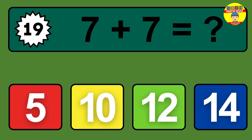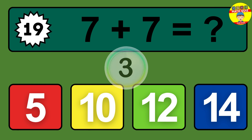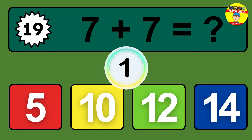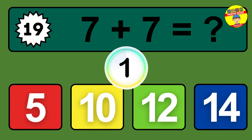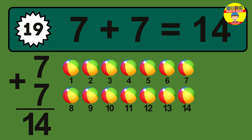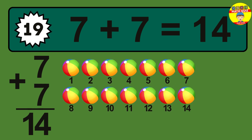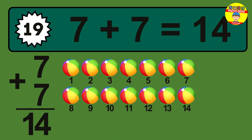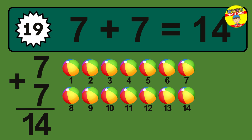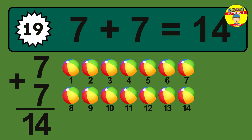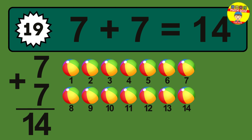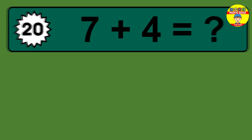Question 19. 7 plus 7 equals what? The answer is 7 plus 7 is 14. Let's count it: 1, 2, 3, 4, 5, 6, 7, 8, 9, 10, 11, 12, 13, 14.